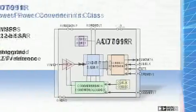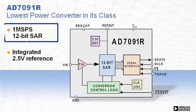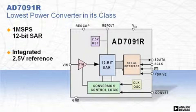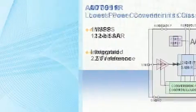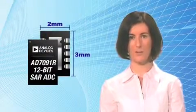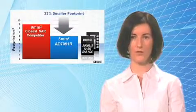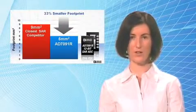The AD7091R is a 1 MSPS 12-bit SAR converter with integrated bypassable 2.5V internal reference. The part is housed in a tiny 2x3mm package, saving over 30% board space versus alternative products.